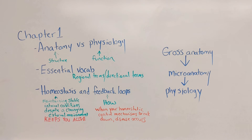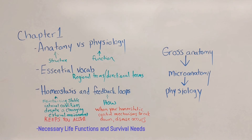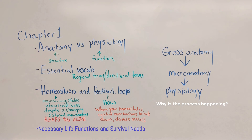What I left out was necessary life functions and survival needs. Necessary life functions are things your body does — like maintaining boundaries, digesting, and movement — anything necessary to keep you alive. A survival need is some kind of external condition or input that must be met to keep you alive, for example water, oxygen, nutrients, and temperature. When you're studying physiology and learning a process, before thinking about the steps, identify why — what is your body even trying to do? The point of the process will always contribute to a necessary life function or meeting a survival need.